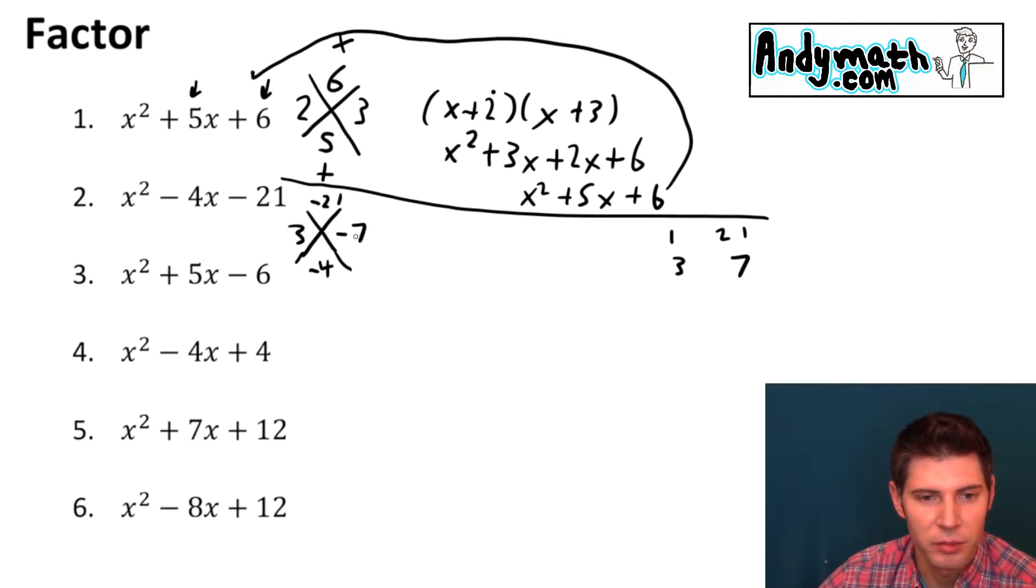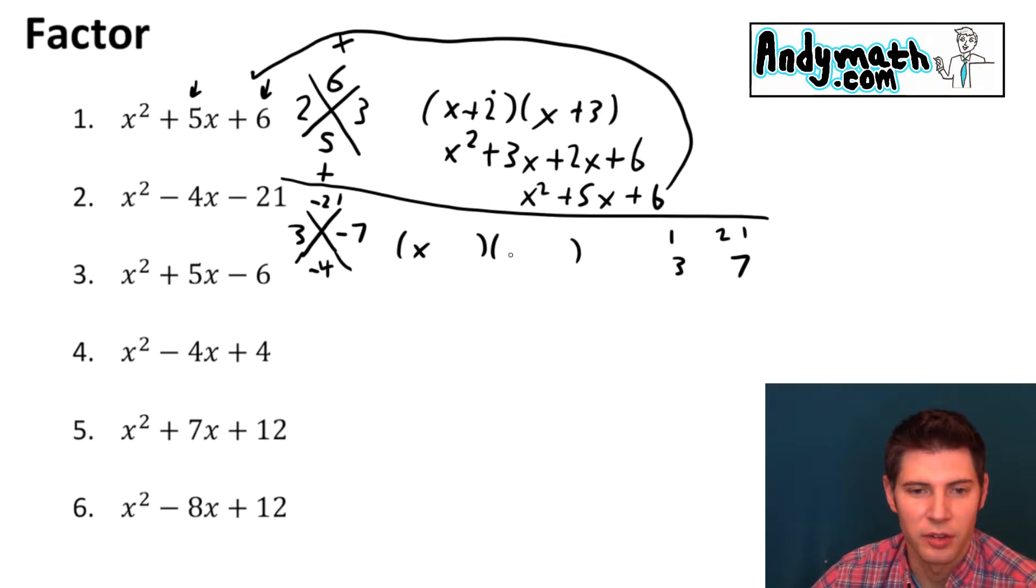Negative 7 and 3. If I added them I'd get negative 4 and if I multiply them I get negative 21. So you'll just get used to these how the negatives work and everything. But you have your x and your x minus 7 plus 3 and we're done. That's how that works.